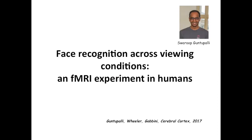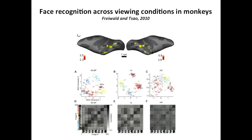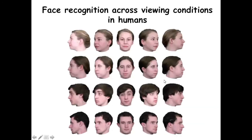It looked like there was a nice progression culminating in recognition of identity in the more anterior area. We showed subjects during an fMRI experiment four different identities in five head positions. Before collecting fMRI data, we wanted our subjects to be visually familiar with the faces based on viewing them under natural conditions with movement, speech, and expressions, so that they became really visually familiar with the 3D view of these faces.